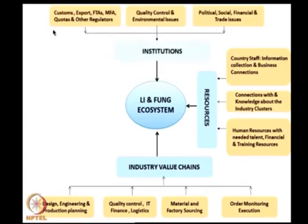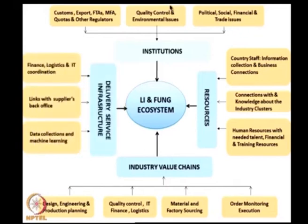The use of institutions includes customs, export regulations, free trade agreements, multi-fiber agreements, quotas and other regulators. Quality control, environmental issues, political, social, financial and trade issues are all important institutional factors. For delivery, there is finance, logistics and IT coordination, links with suppliers' back offices, and data collection and machine learning.